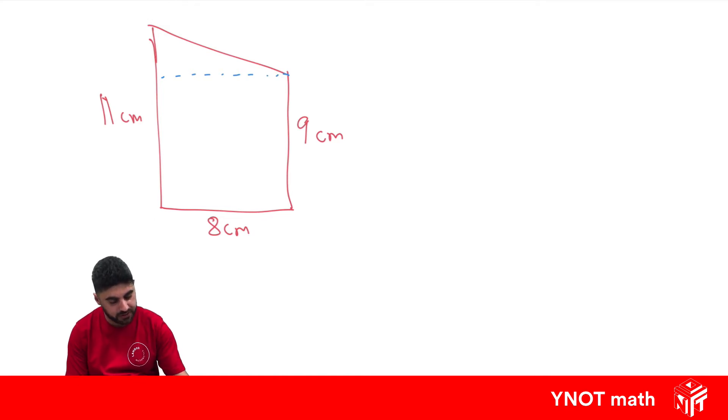bit of extra length. So the blue dotted line is also 8 centimeters because it matches up with the bottom one. And if this is 11 centimeters and this is 9 centimeters, subtracting those gives us this remaining area up here. So 11 minus 9 is 2. So we know this height from here to here is 2 centimeters because the height from here to here is also 9, and 9 and 2 make 11.